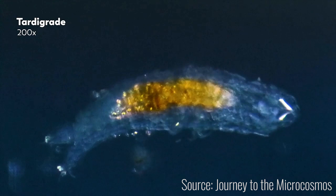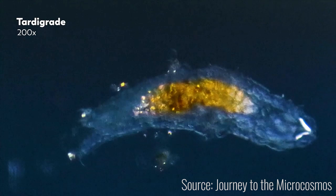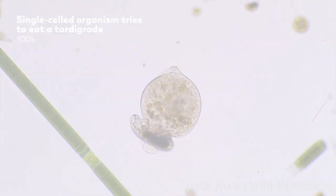The tardigrades feed on bacteria, algae, cryptogams, rotifers, nematodes, and other microscopic invertebrates. They can even feed on other tardigrades. Yes, there are cannibal tardigrades.